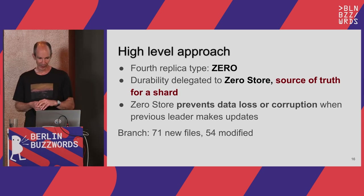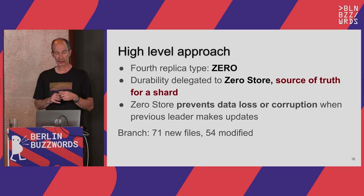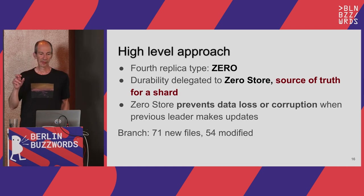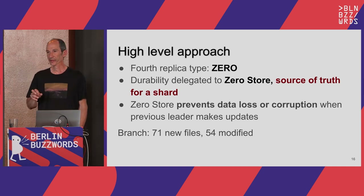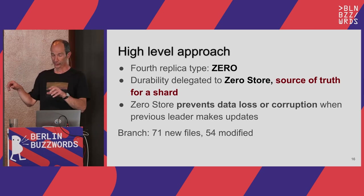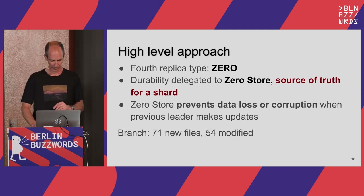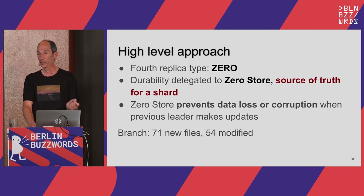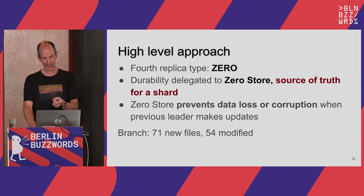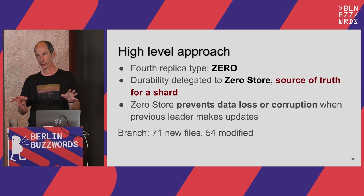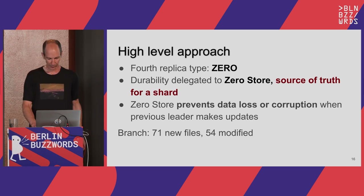The high-level implementation approach: we introduced a fourth replica type called Zero. We delegate all durability concerns to something called the Zero Store, which is based on S3 plus ZooKeeper. We implemented it in a way that prevents data loss and corruption in case an old leader continues doing things after it is no longer the leader. There is a branch upstream with about 70 new top-level classes specific to the implementation, many touch points in the code, and new tests.